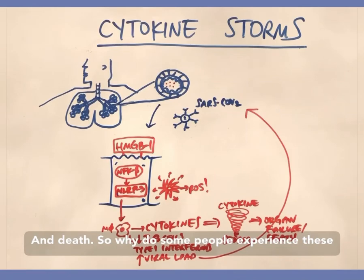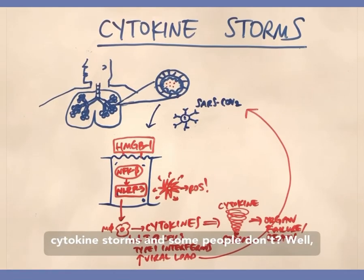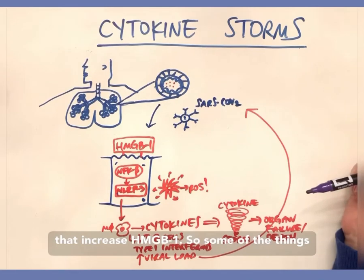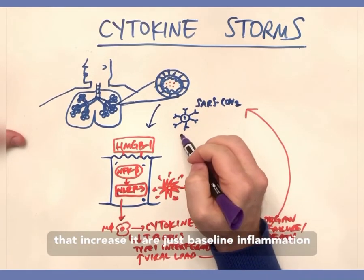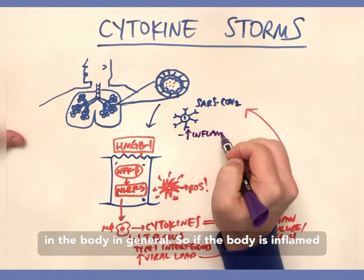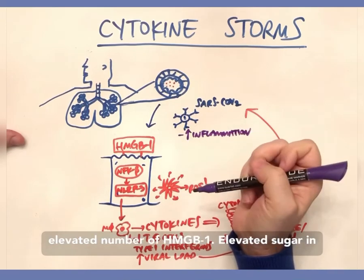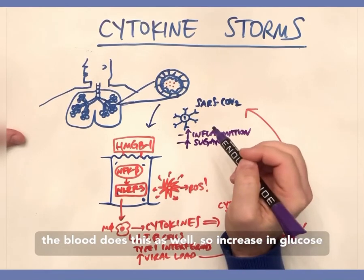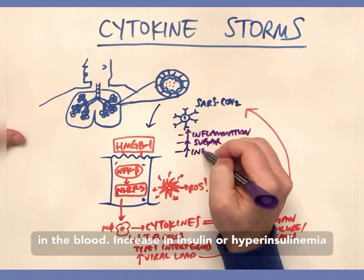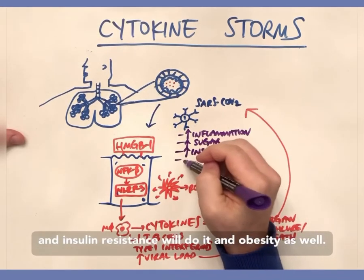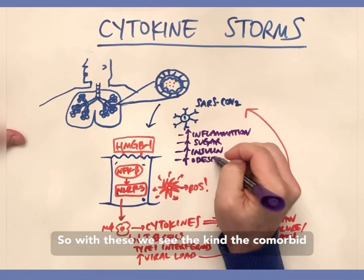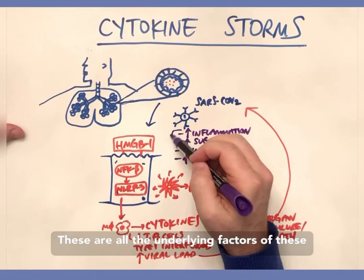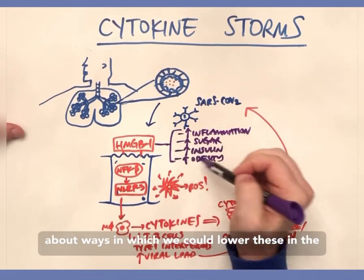So why do some people experience cytokine storms and others don't? There's actually a lot of interesting research on HMGB1 and what increases it. Some factors include baseline inflammation in the body, elevated blood sugar, increased glucose, hyperinsulinemia and insulin resistance, and obesity. These are essentially the underlying factors of the comorbid conditions associated with severe COVID.